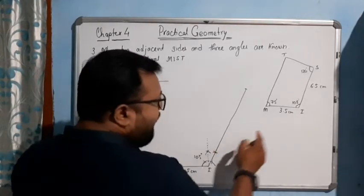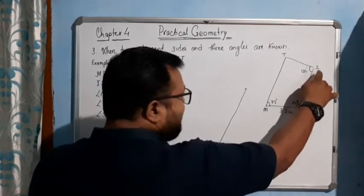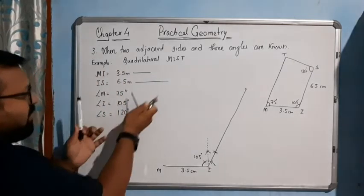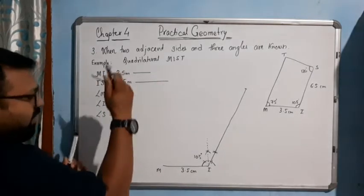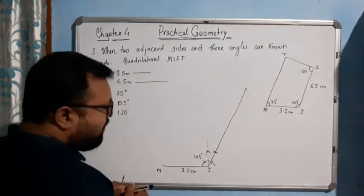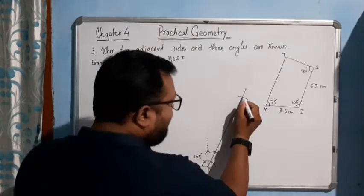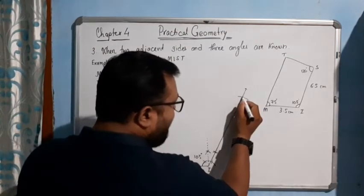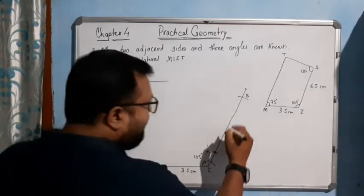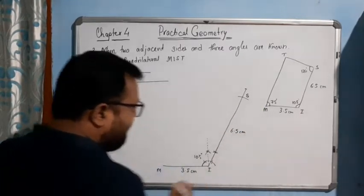From I, you can see S is 6.5 cm away. Measure 6.5 cm, place the pin at I, and put an arc — somewhere here you mark point S. So this distance IS equals 6.5 cm.